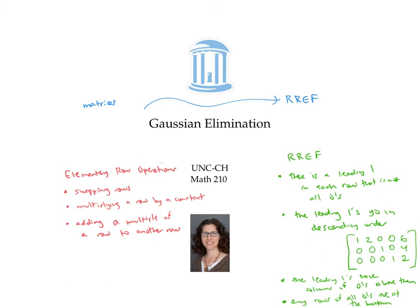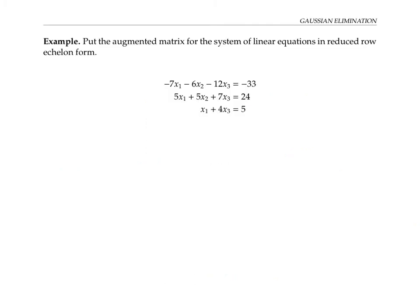The algorithm we'll use to get there is called Gaussian elimination. So let's put the matrix for this system of linear equations into reduced row echelon form. The instructions talk about an augmented matrix. All that means is that we're going to write the coefficients of the first variable x1 in the far left column, followed by the coefficients of x2, the coefficients of x3, and finally these constants on the right side of the equations will go in the far right column. The constants can be thought of as the additional or augmented part of the matrix.